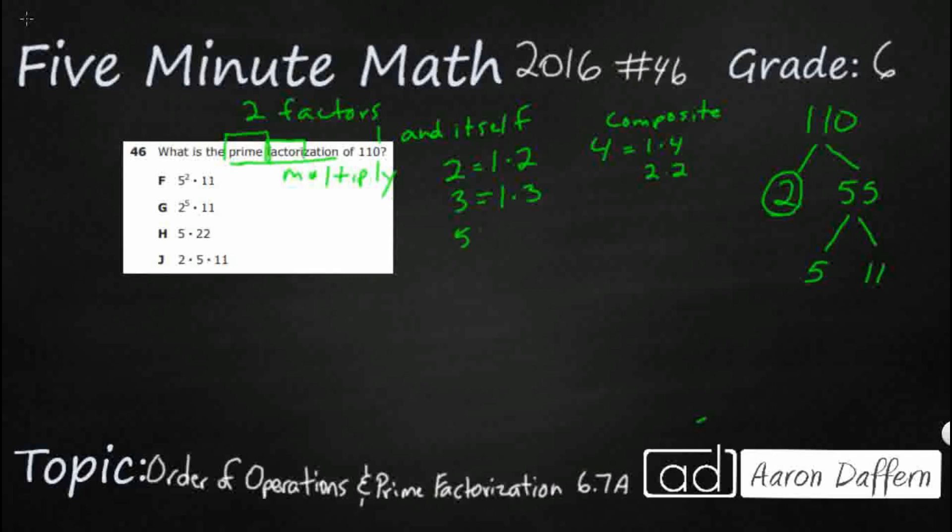Now five is prime. The only way to get to five is one times five. And then 11 actually also happens to be prime. The only way to get to 11 is one times 11. And once you get past two, no even number will ever be prime past two because you can always divide it by two. So now we just put this up in order and we just say two times five times 11. Always list them in order. And look at that. You get your answer here is J.